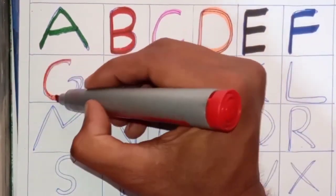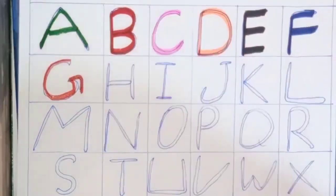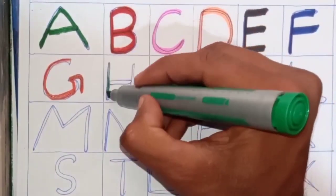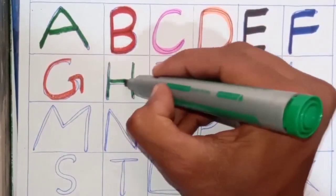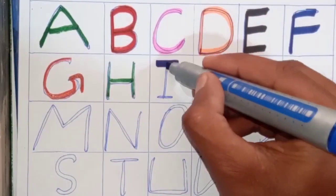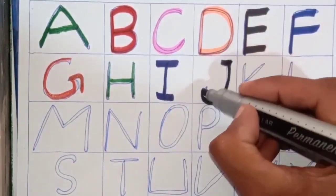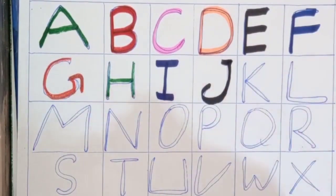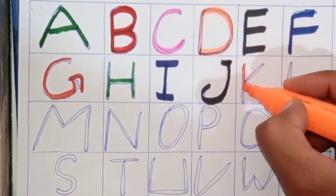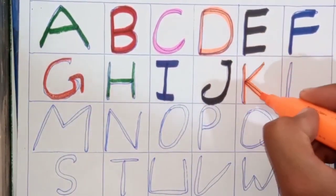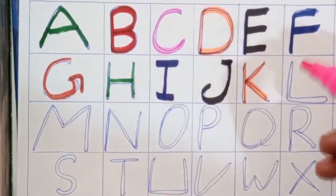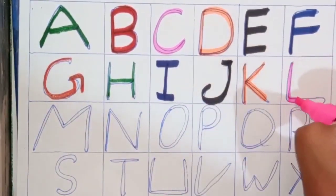G for grabs. H for hen. I for ice cream. J for jug. K for kite. L for line.